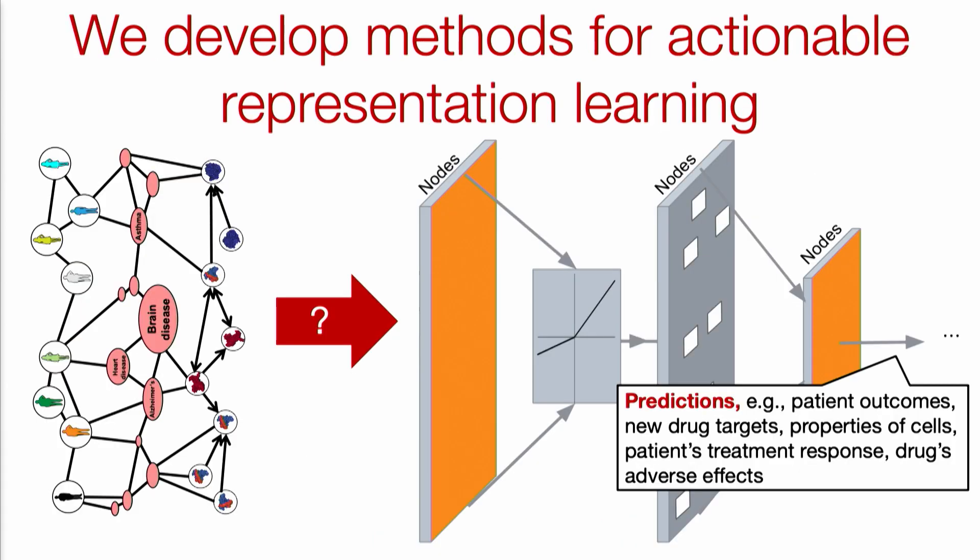Once we have such a data representation, the next question is how to generate those actionable hypotheses. What we do is develop methods that allow us to learn and reason over those heterogeneous biomedical networks — learning very good and actionable representations — and generate predictions that inform downstream experiments. Those predictions might be in the form of predicting patient outcomes, identifying potential drug targets, or predicting treatment regimes for patients.